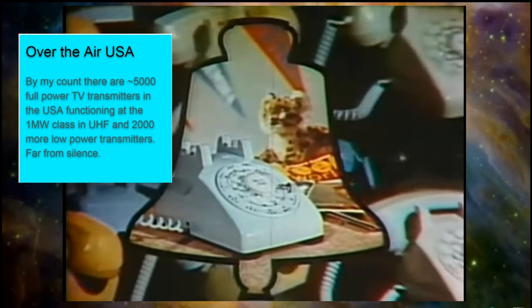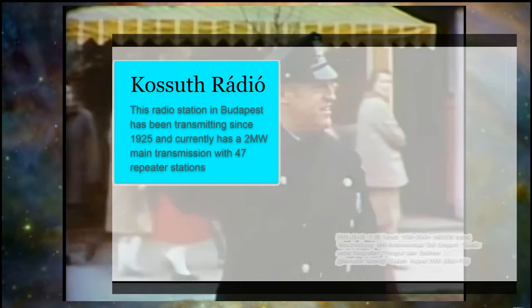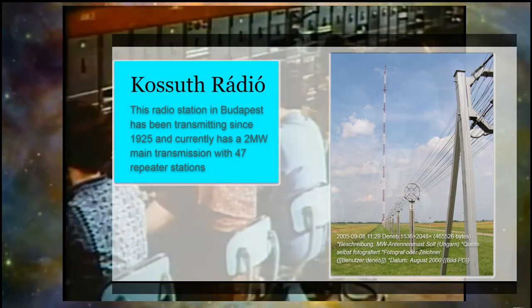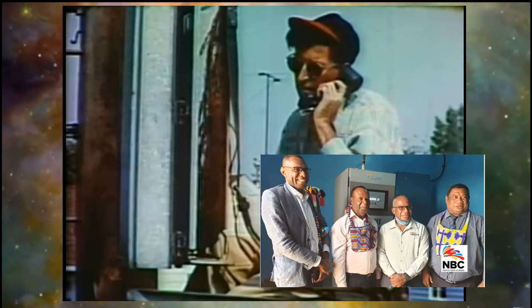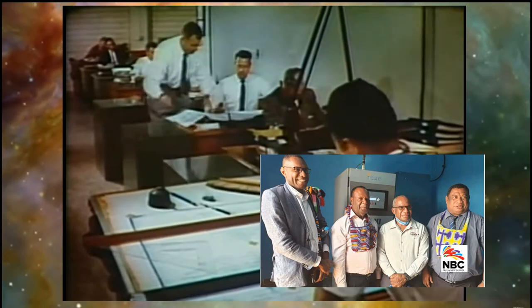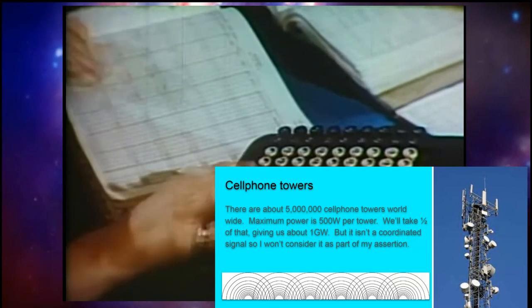Now, if we look at over-the-air transmission of TV in the U.S., there are 5,000 full-power TV transmitters in the USA functioning at the one megawatt class and 2,000 more low-power transmitters. And I counted them. I used the FCC's database to get that. There's a lot of broadcast TV stations still out there. Kosuth Radio in Budapest has been broadcasting since 1925 and has currently got a 2-megawatt transmitter with 47 repeater stations. And NBC, during the pandemic, actually has added more radio stations in Papua New Guinea, and many island nations are using radio because there are simply too many islands to span with cable and the cost.